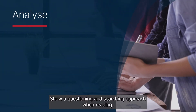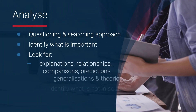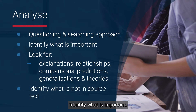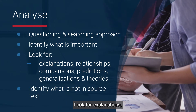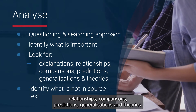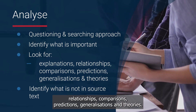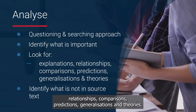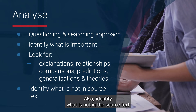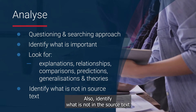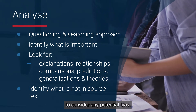How do you do it? Follow these three steps. Step 1: Analyze. Show a questioning and searching approach when reading. Identify what is important — look for explanations, relationships, comparisons, predictions, generalizations, and theories. Also identify what is not in the source text to consider any potential bias.